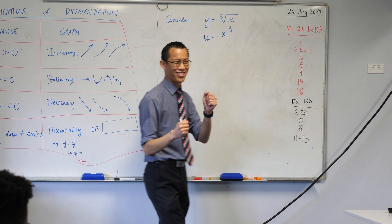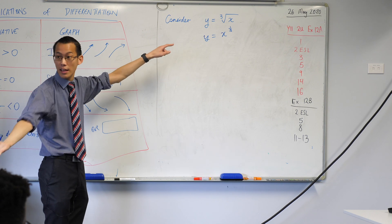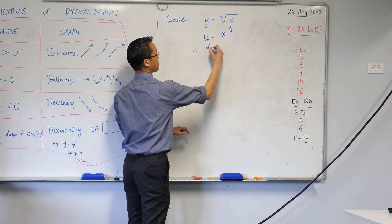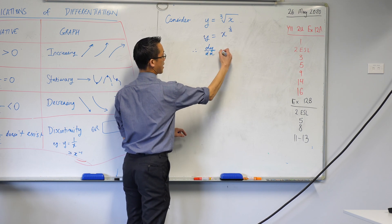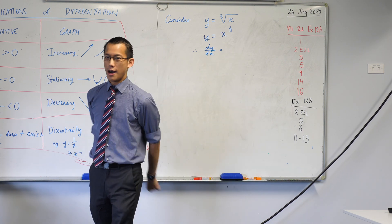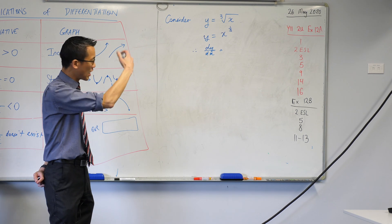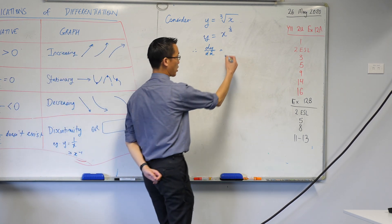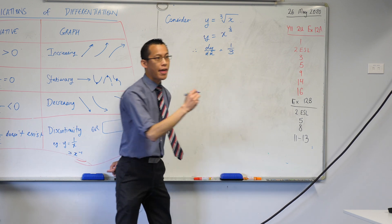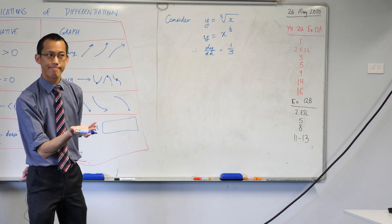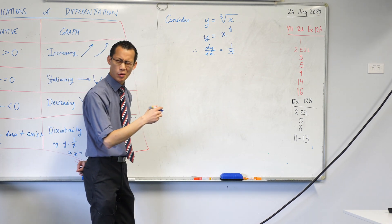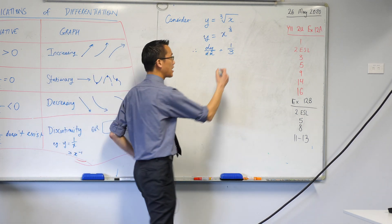And hopefully you were like, yes, I know my index laws. Now, we can differentiate this and I'd like you to do this with me. If this is my function, then dy dx equals. Let's have a think. It's a very simple expression. I'm just going to bring that index out the front, which means 1 over 3. And then what's the second step? You subtract 1 from the index. Now, a third take away 1 is negative 2 thirds.